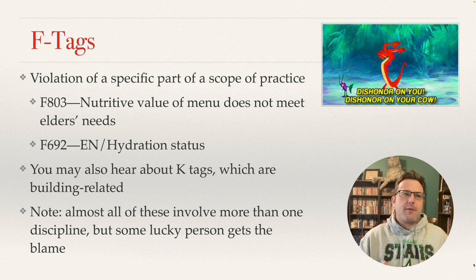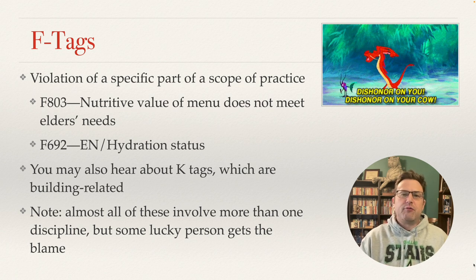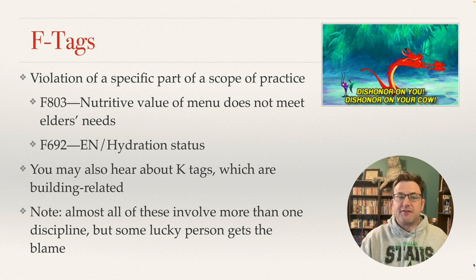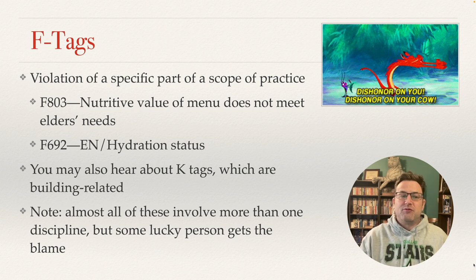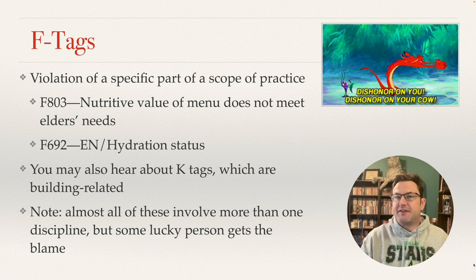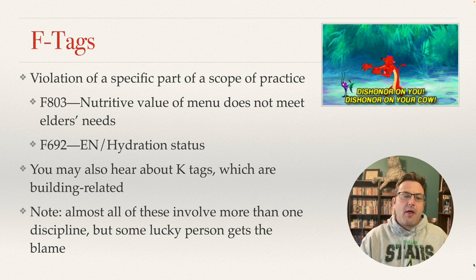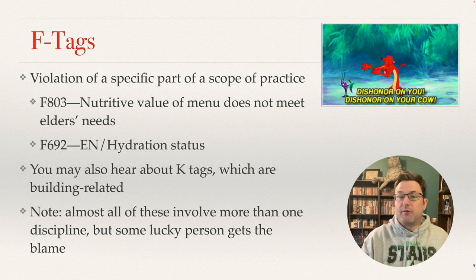If a standard is not met, the survey team will issue what's called an F-tag, which is a violation of a specific part of a scope of practice. Examples that come up within the dietitian scope include F803 — the nutritive value of the menu does not meet elders' needs — and F692, which is enteral nutrition or hydration status. You may also hear about K-tags, which are building-related, such as emergency exits not being marked or handrails not at the correct height.